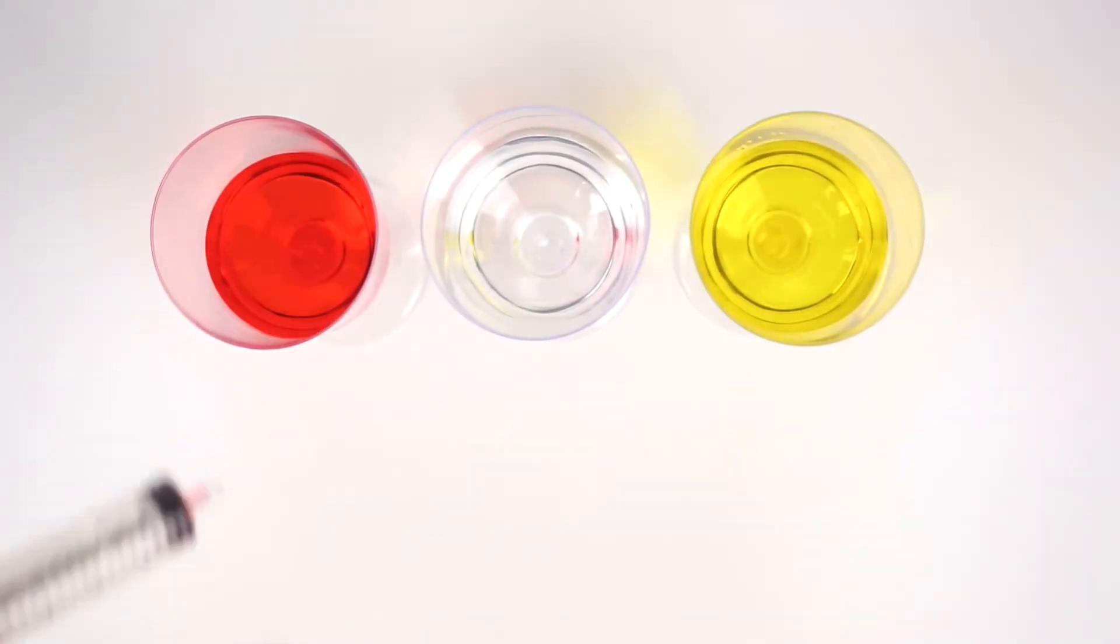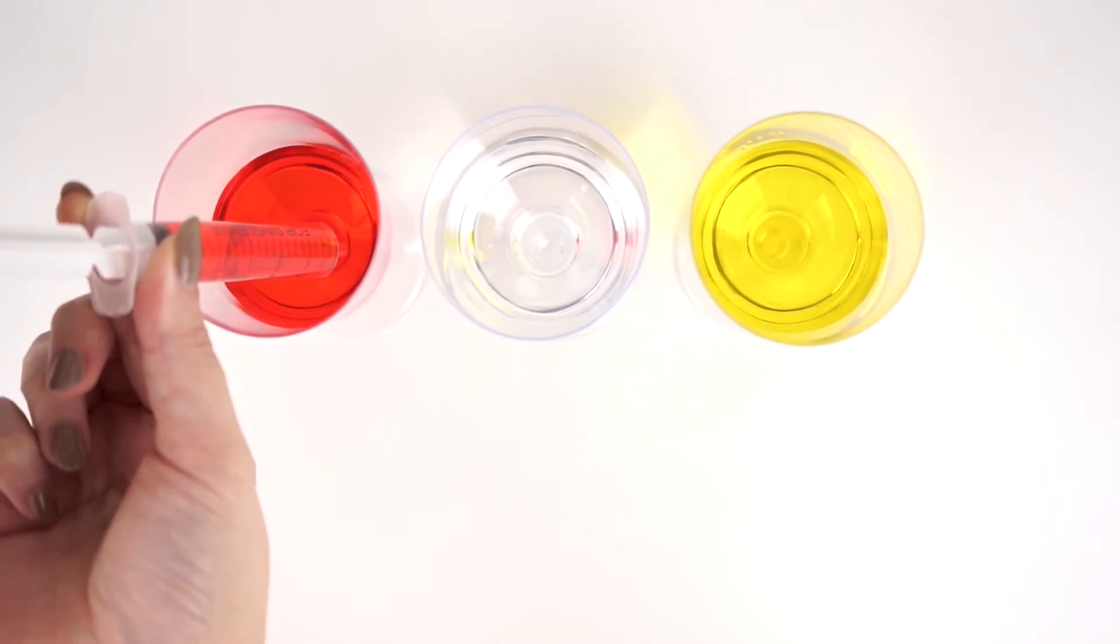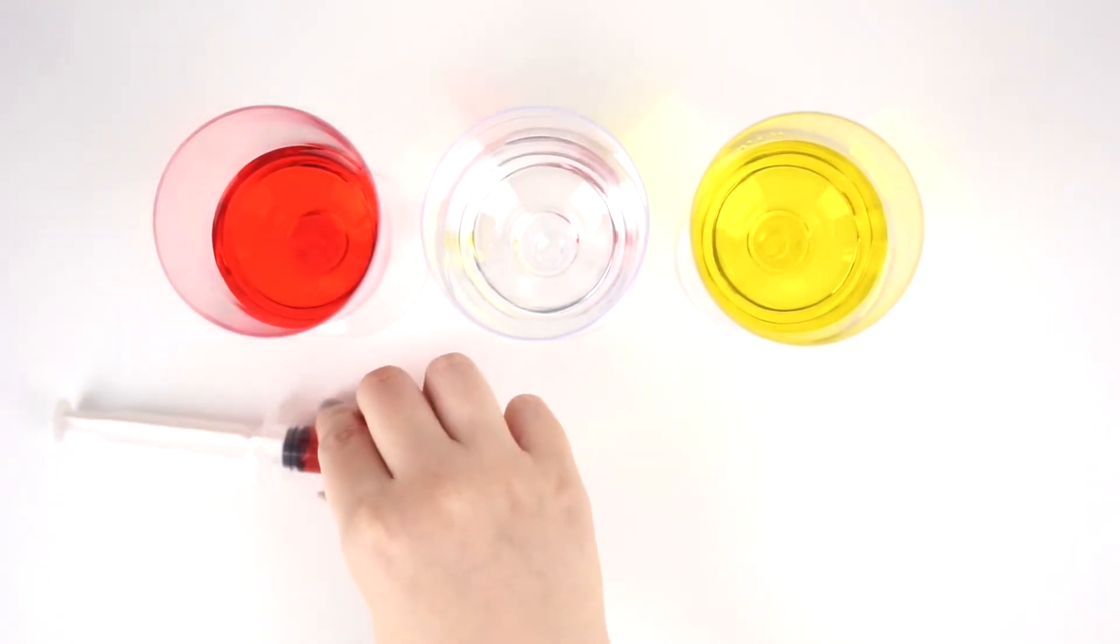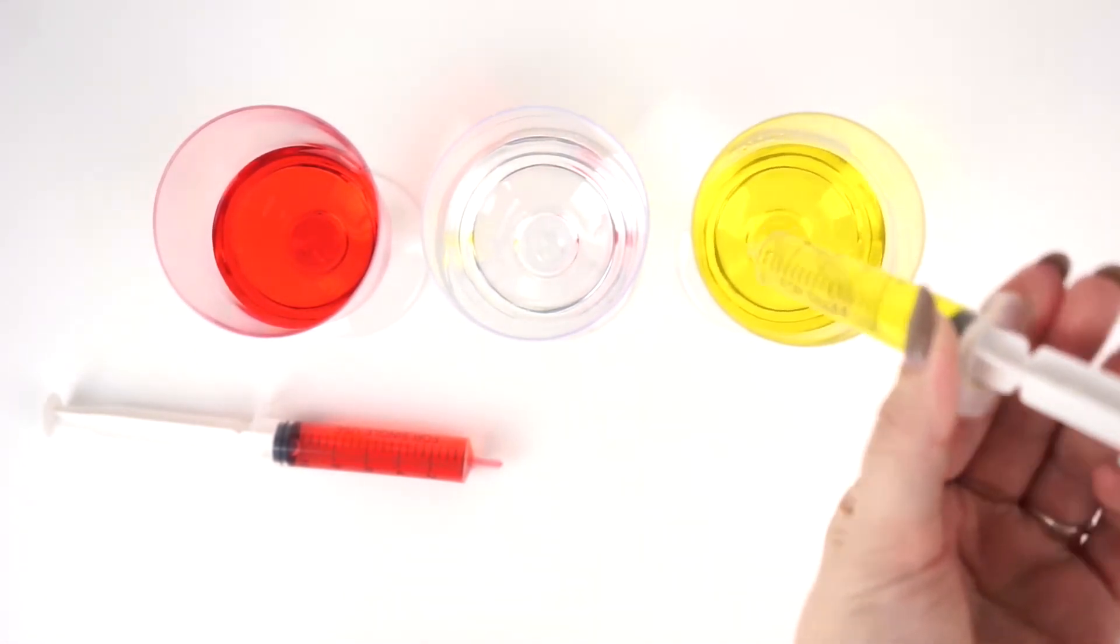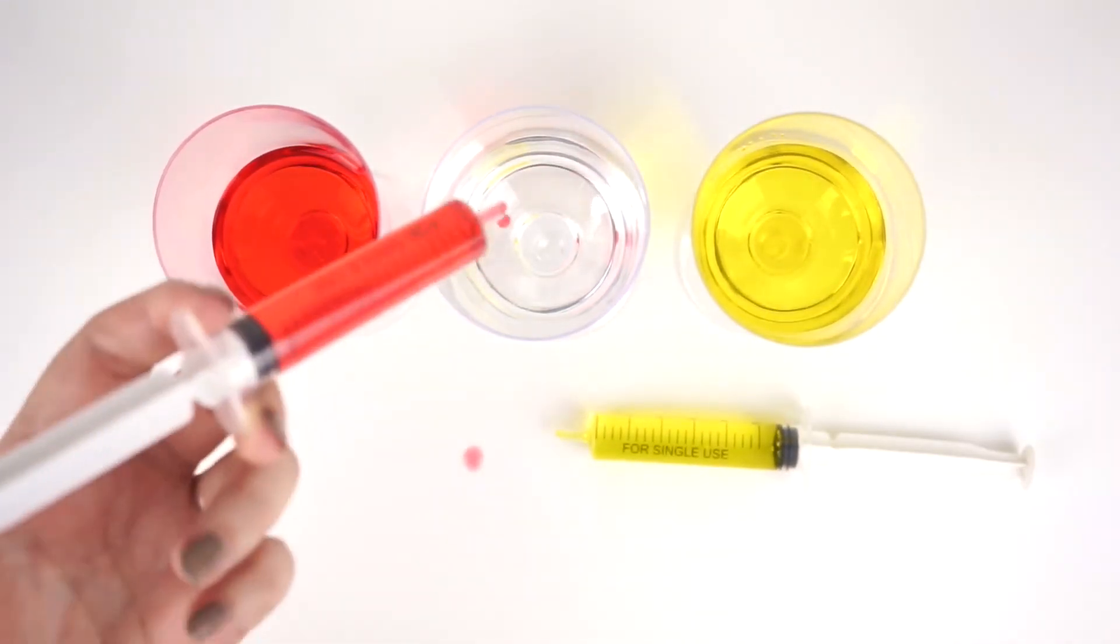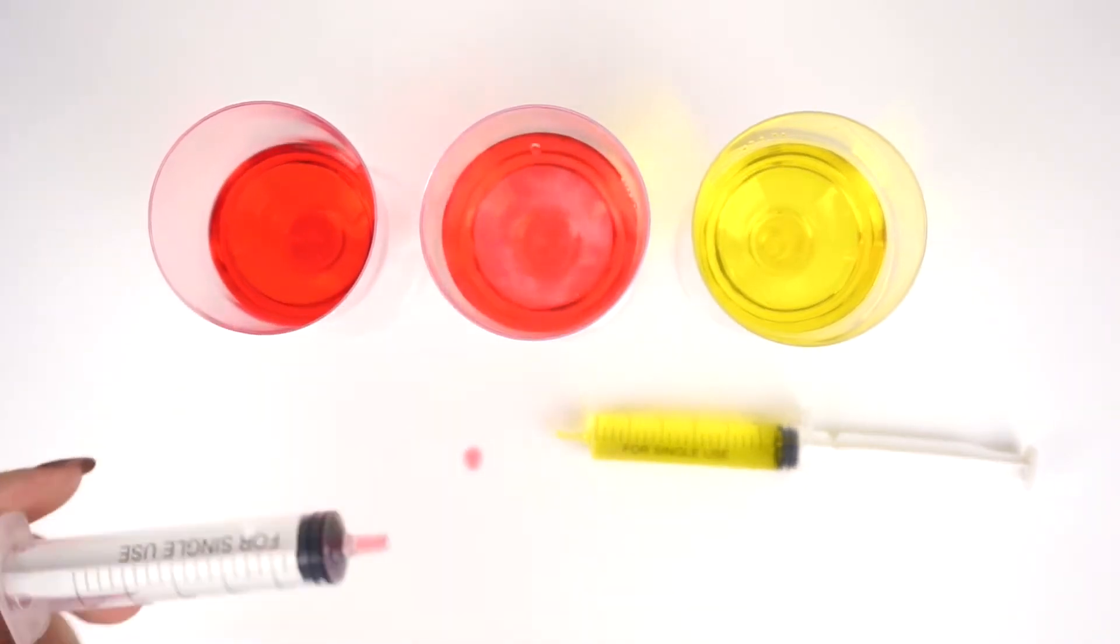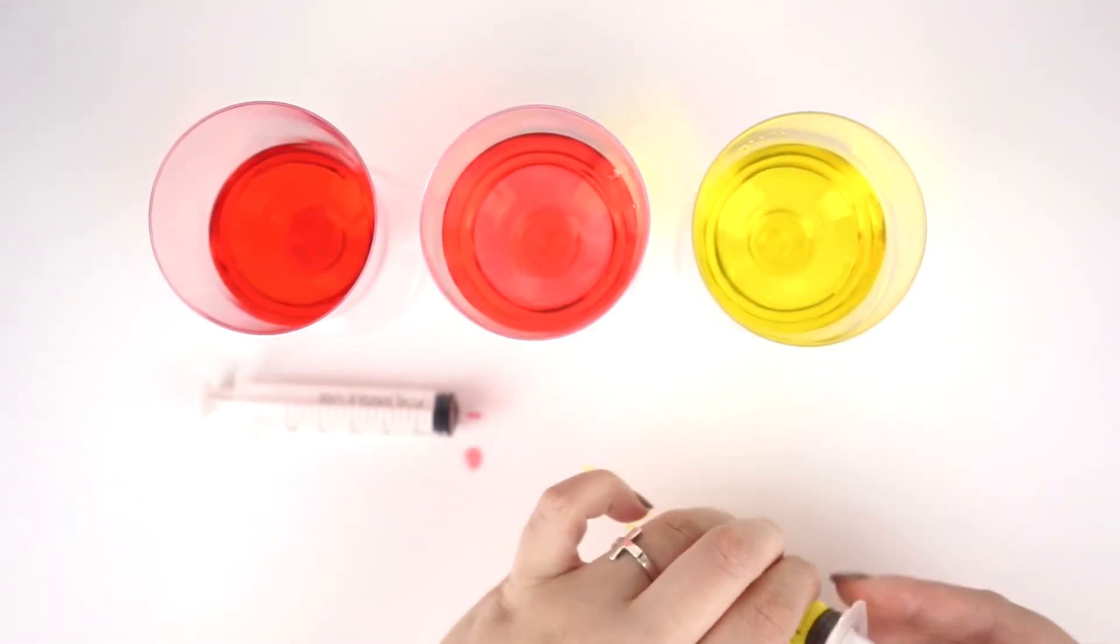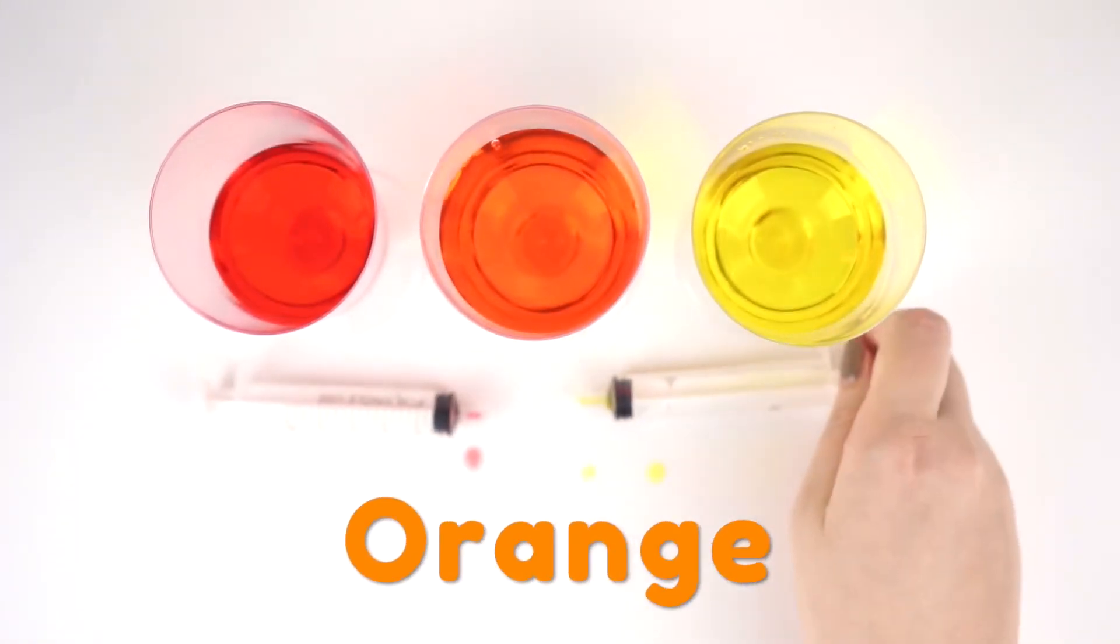Let's try mixing red and yellow. I'm going to suck up some red first. Suck that up with my handy dandy syringe. Going to put that to the side, and let's grab some yellow now. Let's put that down. I'm going to put the red in first, squirt that in, and watch what happens when I put in the yellow. Whoa, it's turning orange. Red and yellow make orange. How cool.